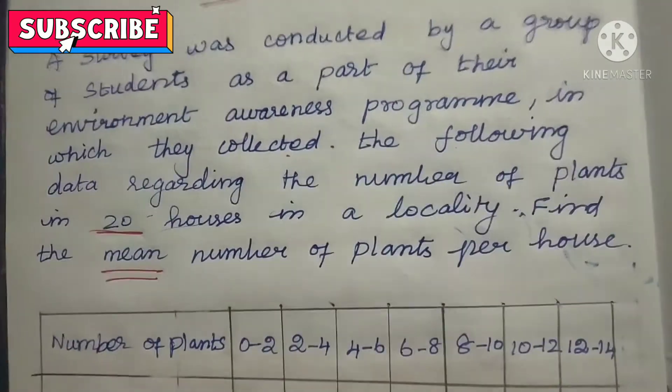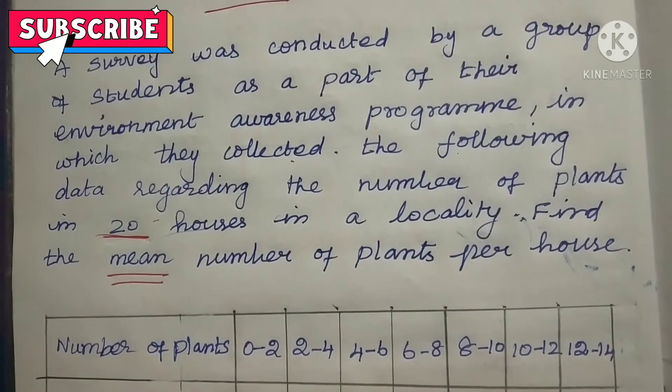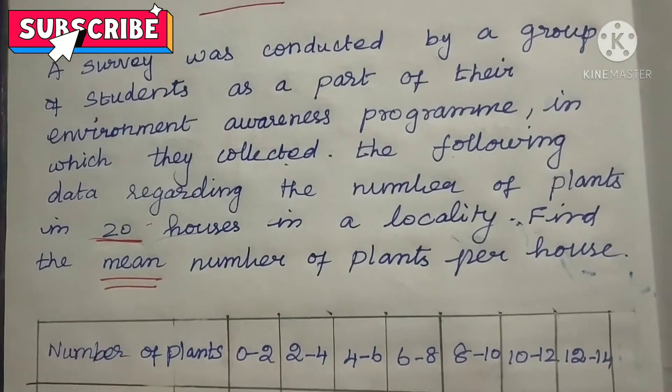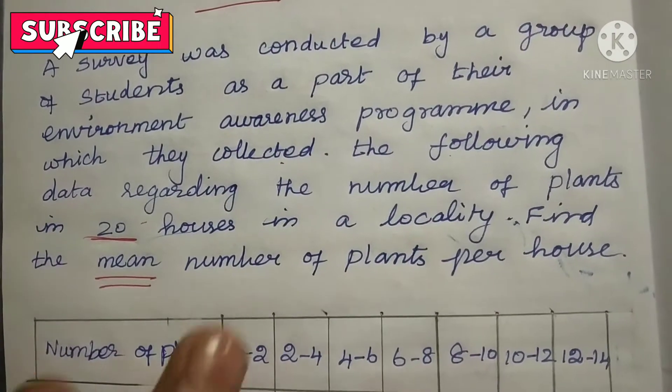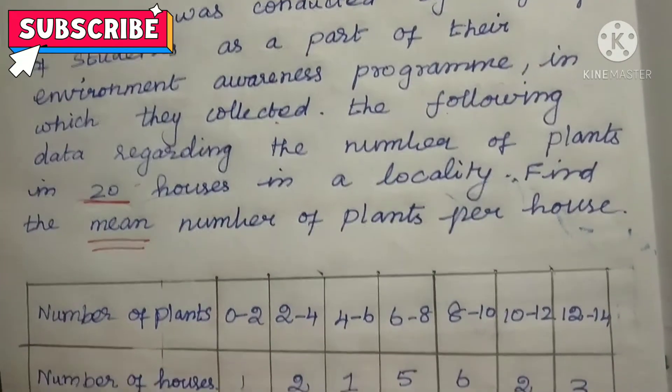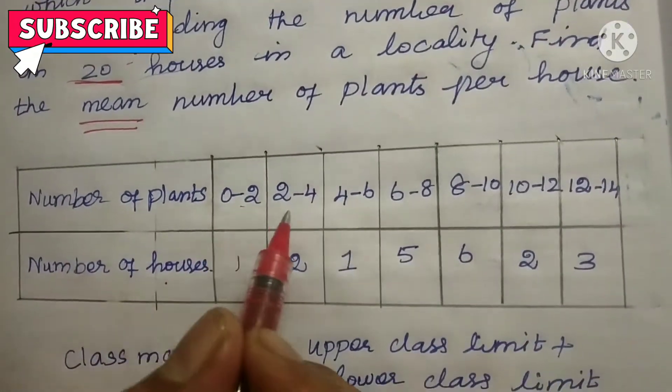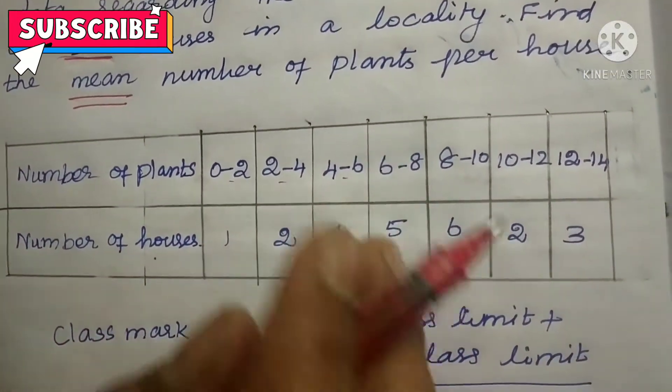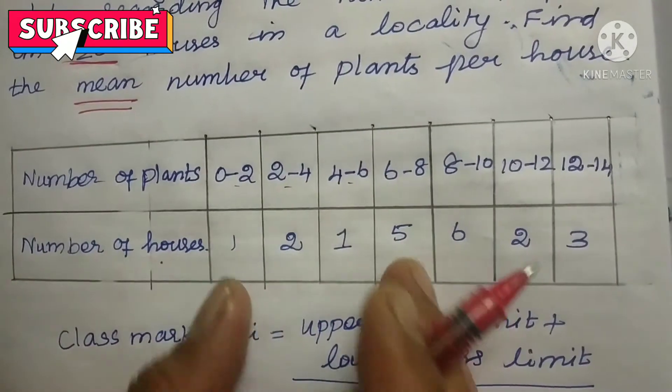So we are going to find the mean by using direct method. The direct method is very easy. The number of plants is given, number of houses is given. So 0 to 2, 2 to 4, 4 to 6, that is the range is given. This is called frequency.